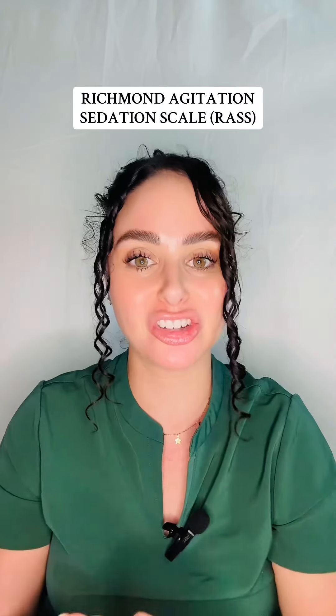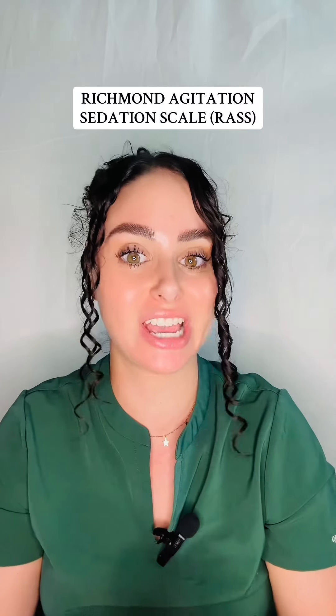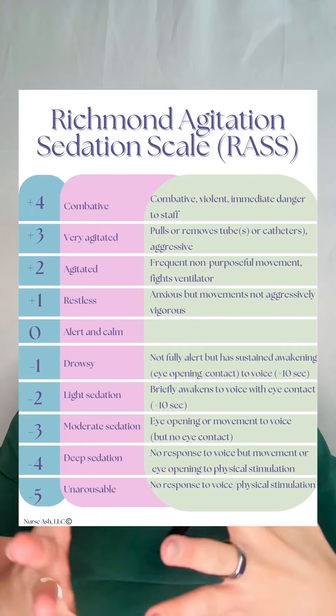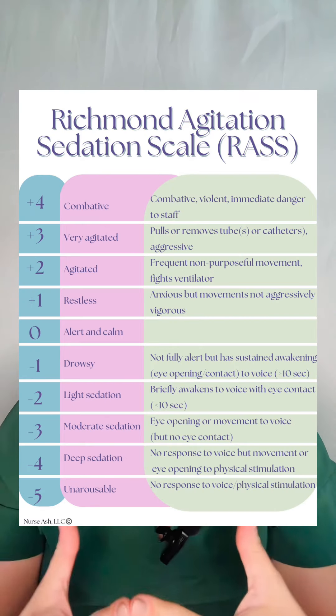Let's talk about the Richmond Agitation Sedation Scale, also known as the RASS scale. It's a very common scale that we use in the ICU to measure how awake or how sleepy a patient is — it assesses the level of alertness and agitation in our ICU patients.